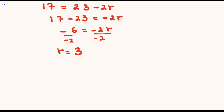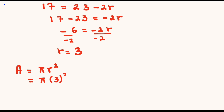Since this is the radius of our circle, our area will be equal to π r squared, where r is equal to 3. The 3 squared will be equal to 9, and 9 multiplied by π will be our area.